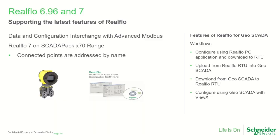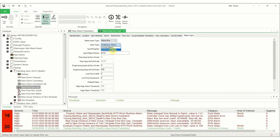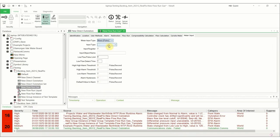In this version, we're building in the latest features of RealFLO 696 and RealFLO 7. This is the data and configuration interchange using the advanced Modbus protocol, and this understands the configuration of the flow runs up and down. It allows configuration of flow runs with GeoScada and with the RealFLO tools and the device, so that's a full set of workflows built in, including compatibility with SCADAPAC X70, which includes the ability to address database objects both by the register number or also by the register or point name or object name.